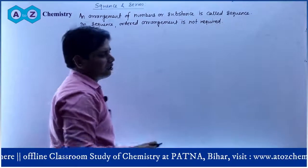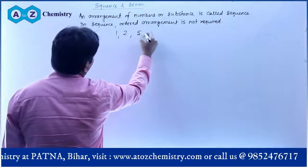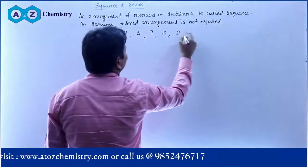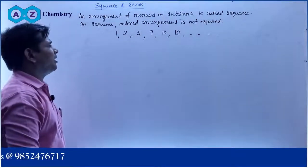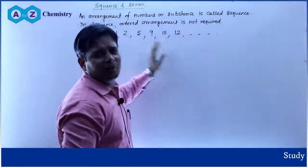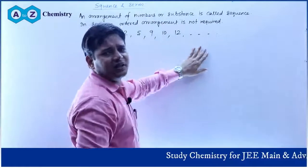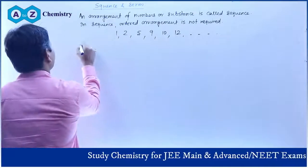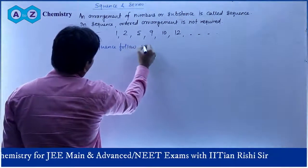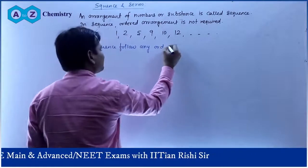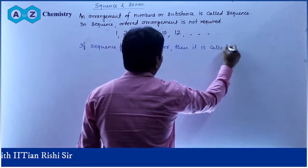It is possible that order is not required — there is no need for order in a sequence. You can see that 1, 2, 5, 9, 3, 10, 2 — any such arrangement can be a sequence. But when there is a definite order, then it is called a Progression.